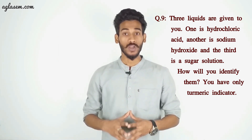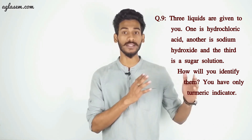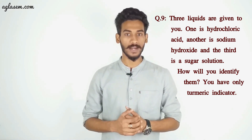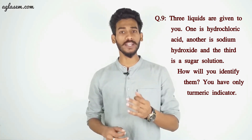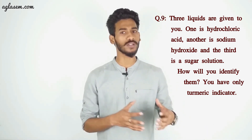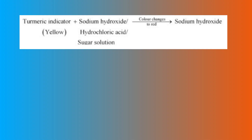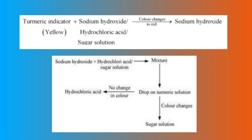Question 9: Three liquids are given — hydrochloric acid, sodium hydroxide, and a sugar solution. How will you identify them using only turmeric indicator? Put a drop of each liquid on turmeric indicator. The liquid that changes the color of turmeric indicator to red is basic in nature — this is sodium hydroxide. Then put a drop of sodium hydroxide on each of the other two liquids and test on turmeric indicator. The drop that changes the color to red contains sugar solution, because a basic and neutral mixture is basic. The drop that does not change the color contains hydrochloric acid, because HCl reacts with NaOH to form a neutral solution.